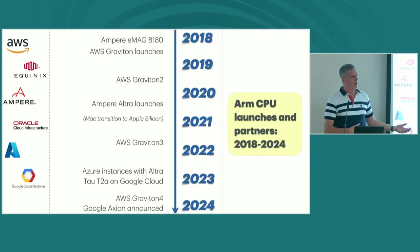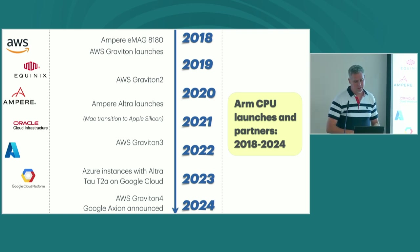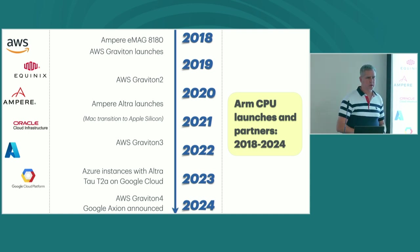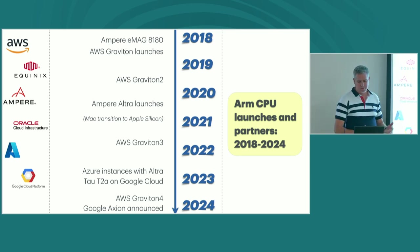The heavy hitters — the clouds — started offering ARM servers. This is roughly a valid timeline of things that were launched or released through the last six years or so.